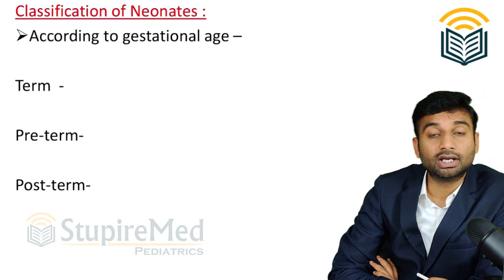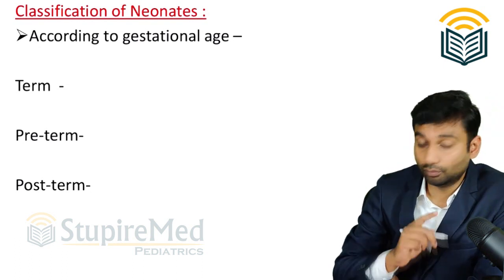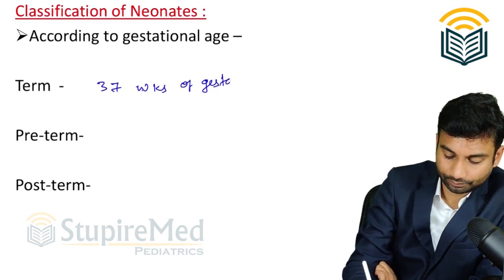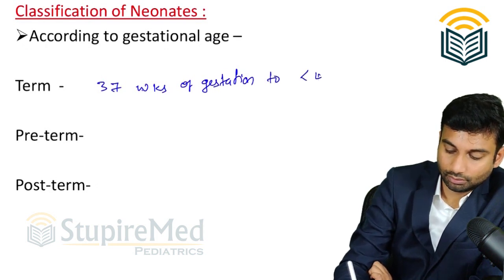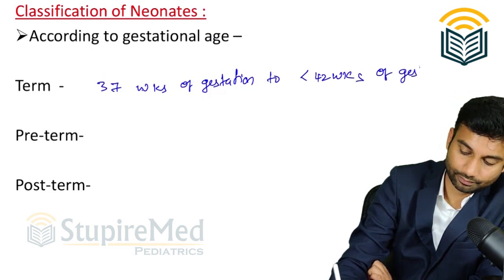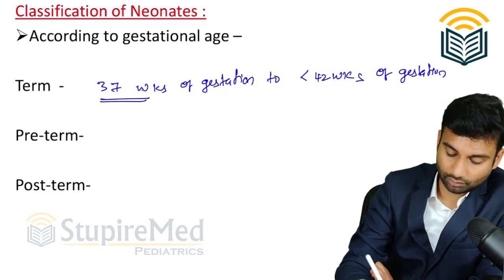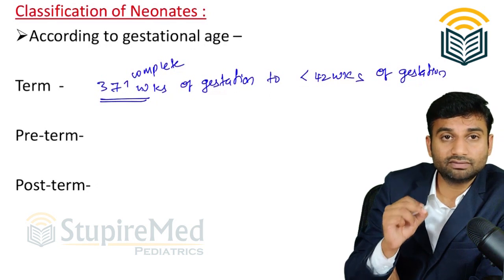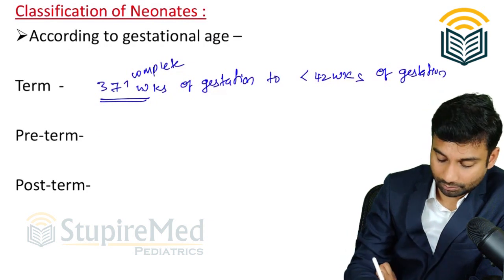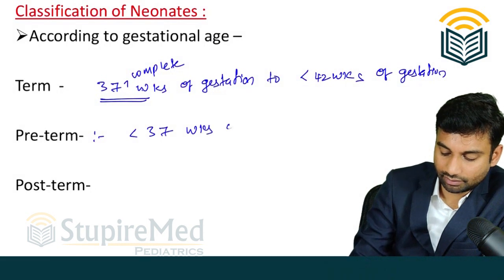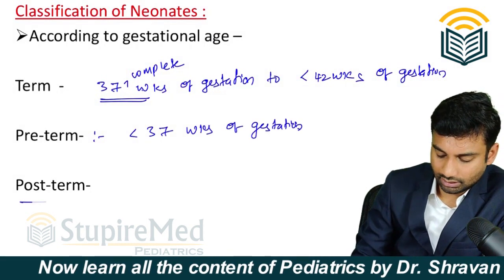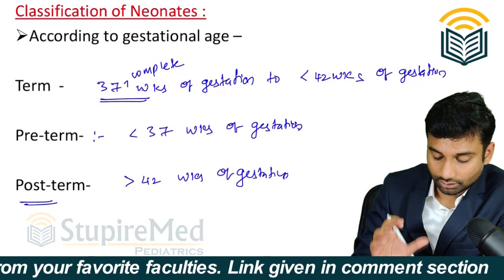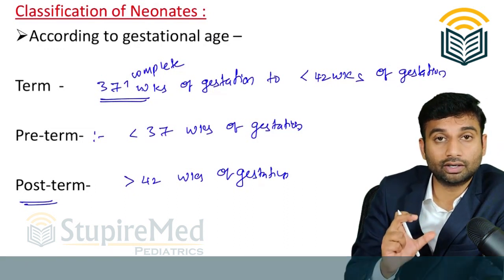According to gestational age, the neonatal classification is as follows. A term baby is one born from 37 completed weeks of gestation to 42 weeks of gestation. If the baby is born before 37 weeks of gestation, it is called a preterm baby. If the baby is born after 42 weeks of gestation, it is called a postterm baby. This is the classification of neonates according to gestational age.